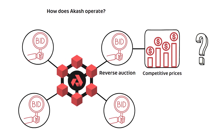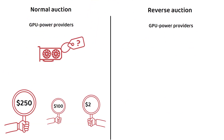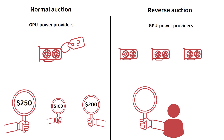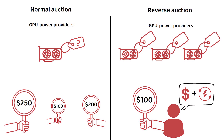But how exactly does a reverse auction work? Instead of who will pay the most, it's a case of who will do the work for the least. Say you have $100 to spend for a certain amount of GPU power. In a reverse auction, you name your price and your requirements — for example, how much processing power you need — and then GPU power providers compete to provide the service cheaper. Maybe one provider will give you the required processing power for $90, maybe another will do it for $80, until it reaches a floor where no one is willing to do the work for less.